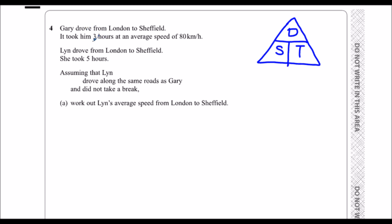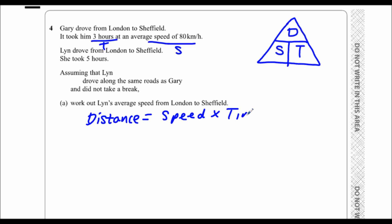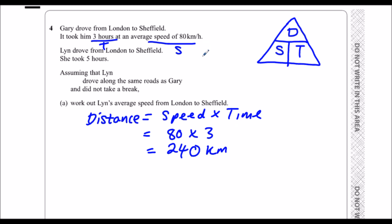Gary drove for three hours — that's the time — at a speed of 80 — that's the speed. To work out the distance, which is the missing information, distance equals speed times time. Speed is 80, time is 3. So 8 times 3 is 24, add on the zero: 240. And it's in kilometres because it was kilometres per hour. So the distance is 240 kilometres.